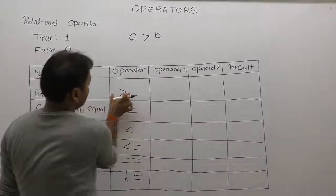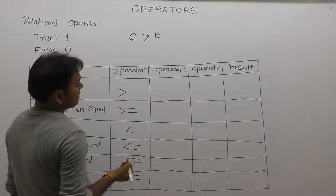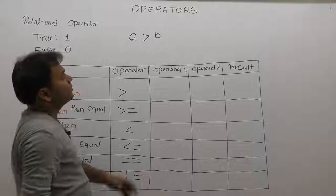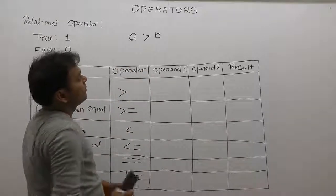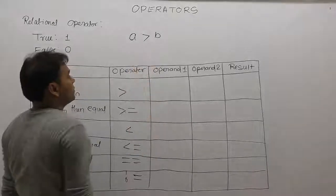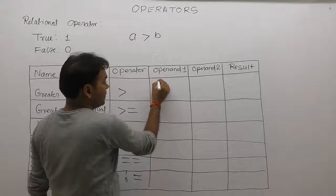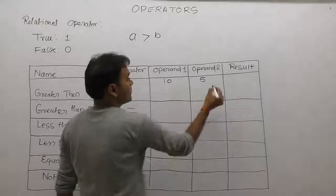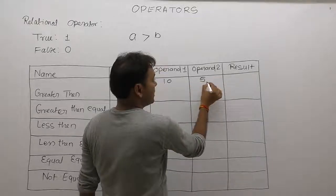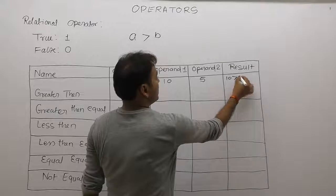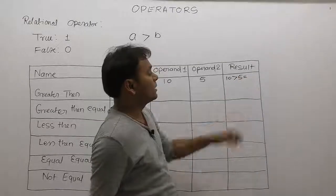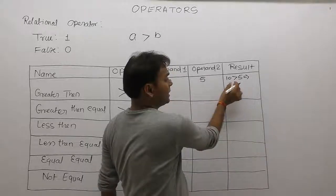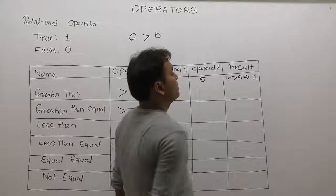The greater than operator returns either true or false. If the first operand's value is greater than the second, the result is true — true means one; otherwise false. Example: operand one is ten, operand two is five. Ten greater than five — result is true, means one. Next: five greater than ten — this relation is false, means zero. Third case: five greater than five — five cannot be greater than five, so again false.